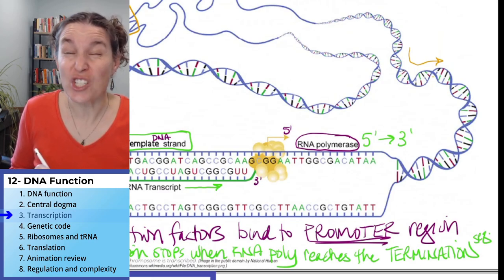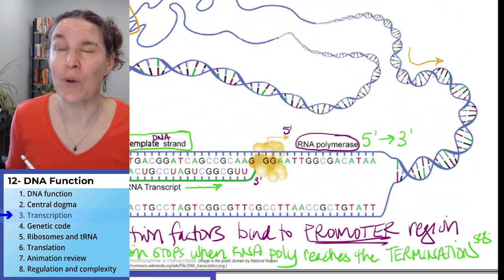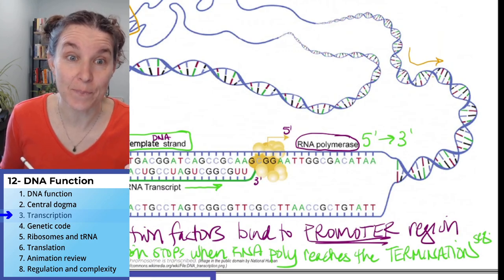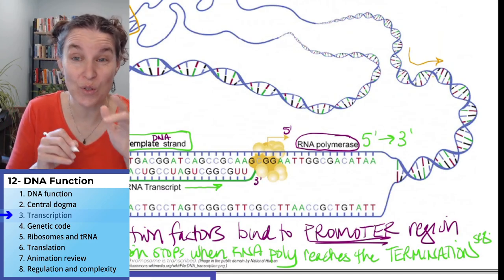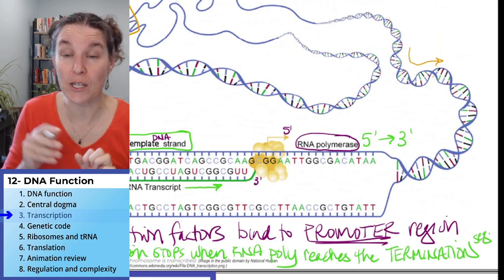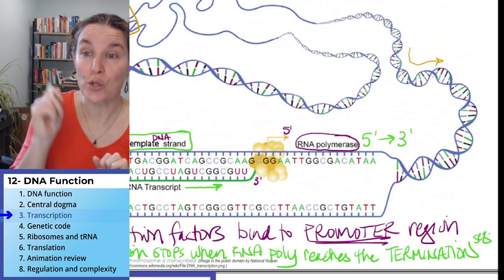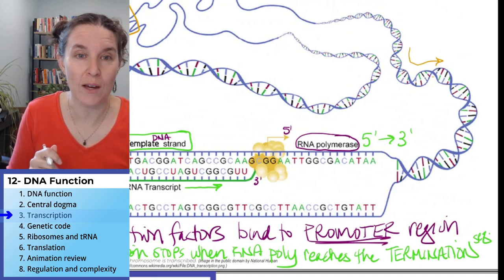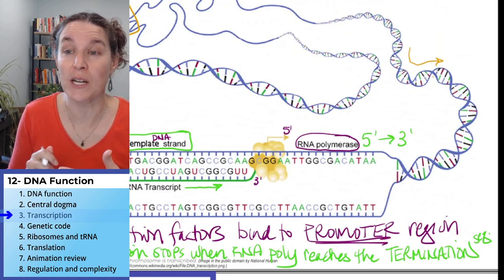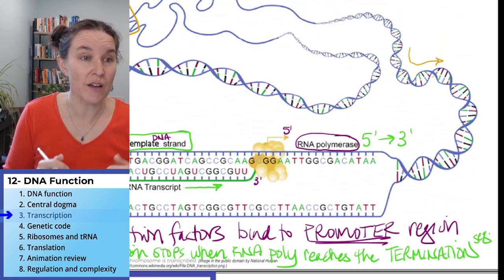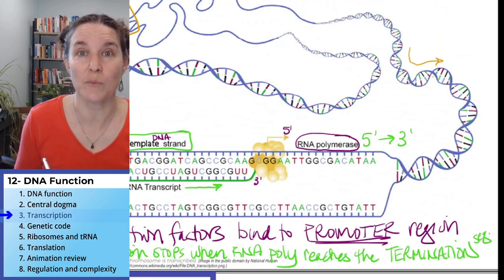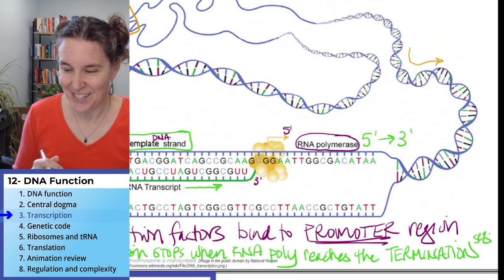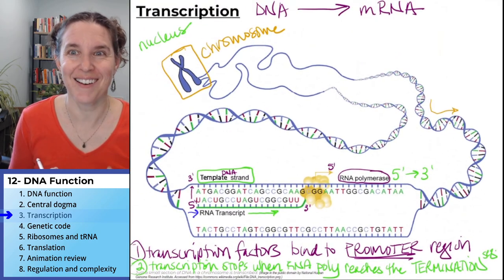We're going along just like DNA replication, except we're using RNA nucleotides, and we cruise along from the promoter region to the termination sequence. When the RNA polymerase reaches the termination sequence, it falls off — and that's the process of transcription.